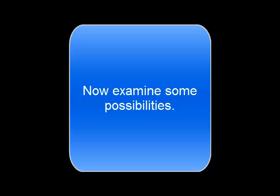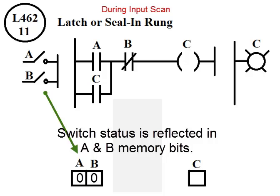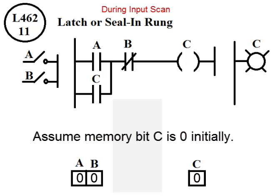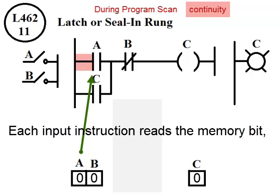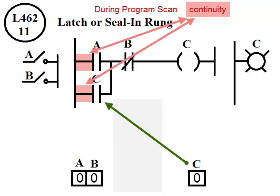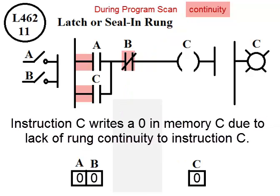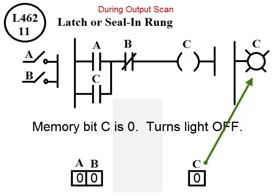Now examine some possibilities. During input scan switch status is reflected in A and B memory bits. Assume memory bit C is 0 initially. During program scan each input instruction reads the memory bit and results in rung continuity from left to right. Instruction C writes a 0 to memory C due to lack of rung continuity to instruction C. Memory bit C is 0. The light turns off.